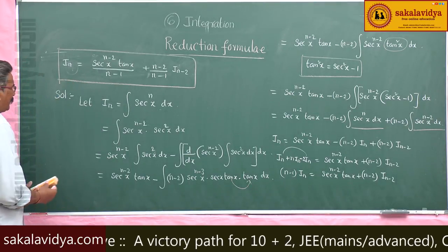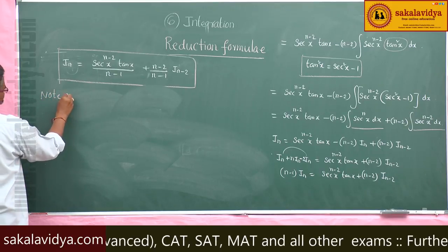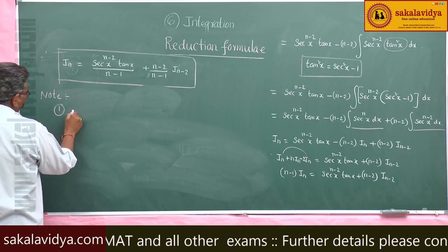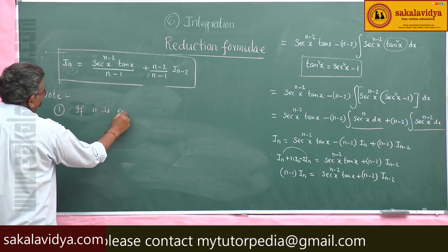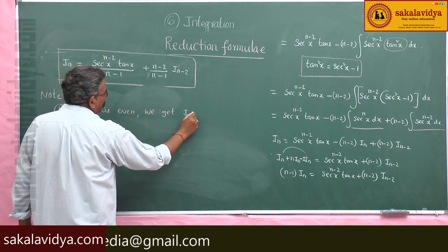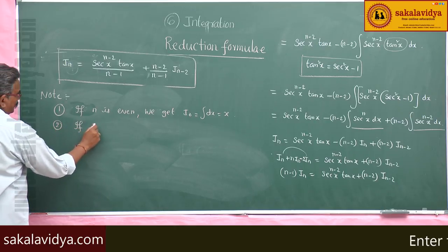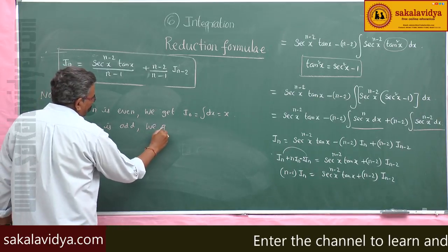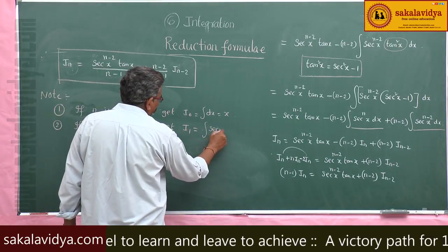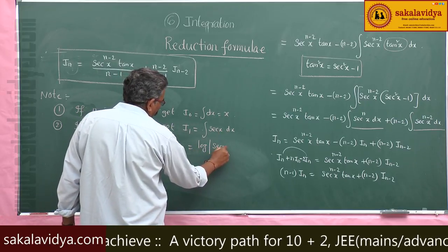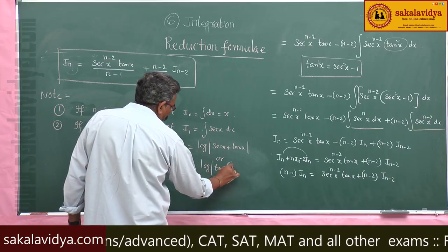Now let us discuss different cases of the reduction. After successive reduction: if n is even, we get I_0, which is integral dx = x. If n is odd, after successive reduction we get integral of sec x dx, which is log|sec x + tan x|, or log|tan(π/4 + x/2)|.